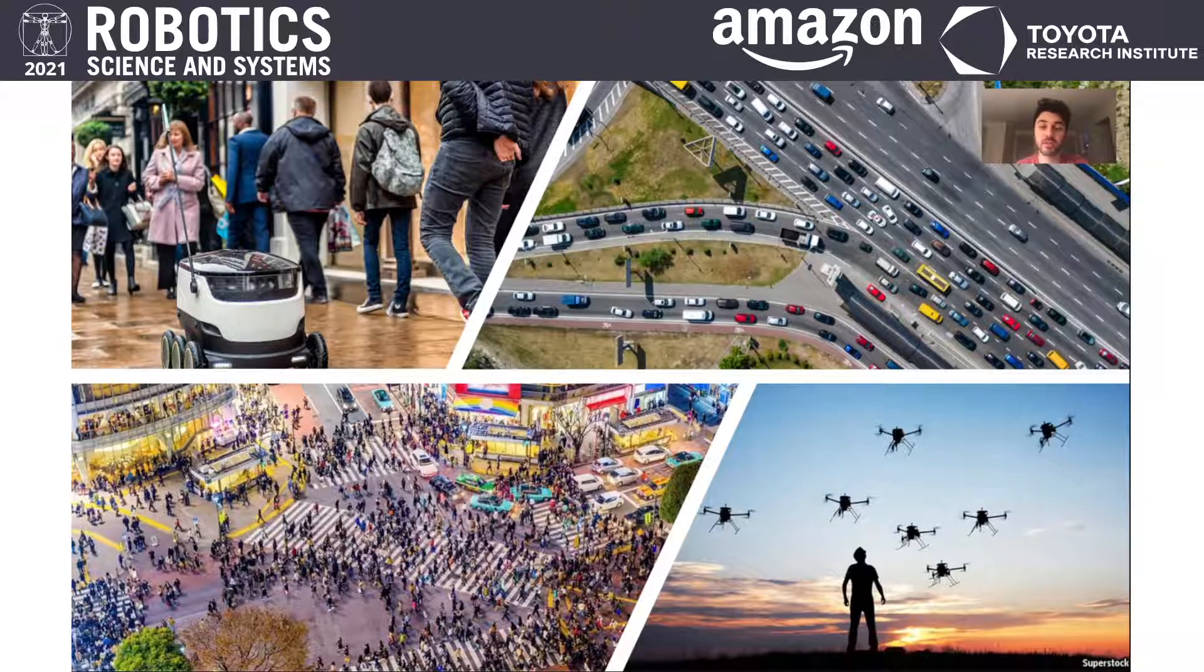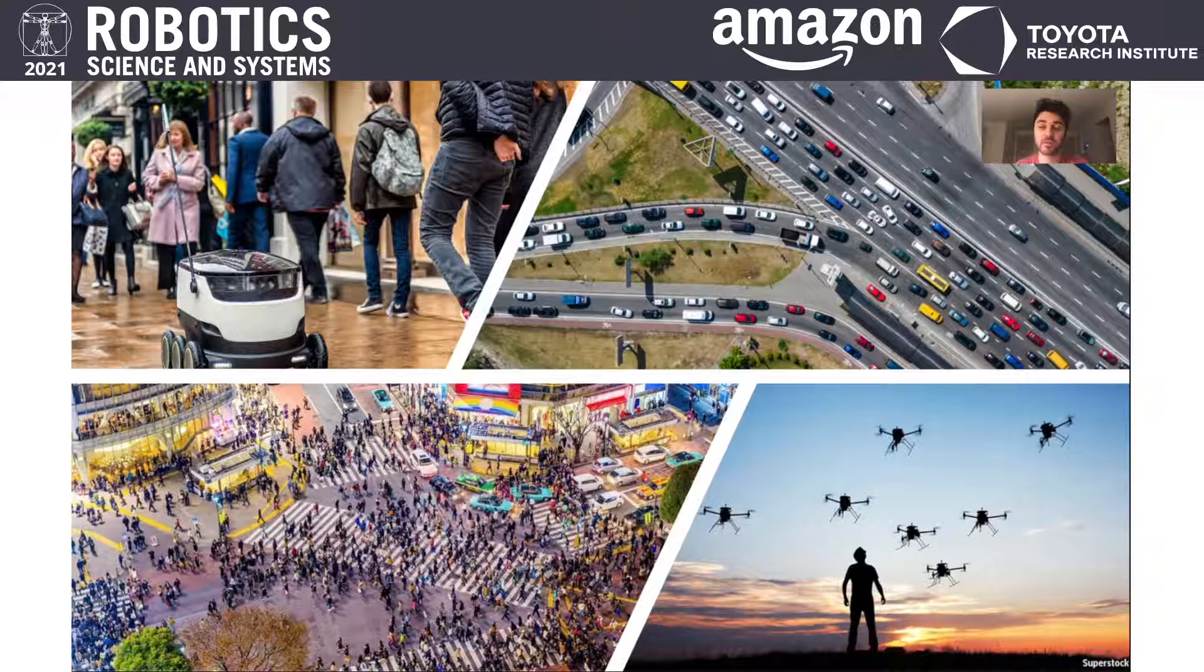For instance, a delivery robot needs to interact with pedestrians, an autonomous car needs to share the road with human-driven cars, or a drone needs to interact with other drones to maintain a formation.